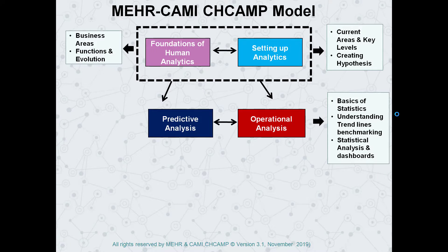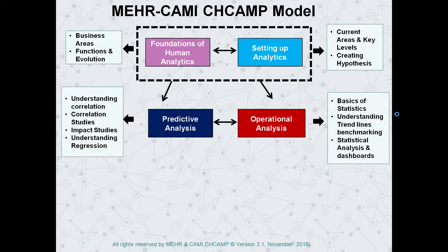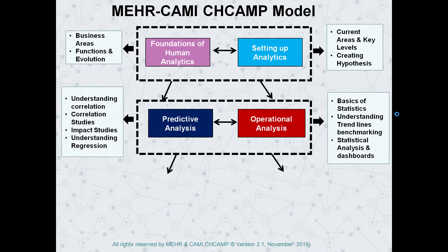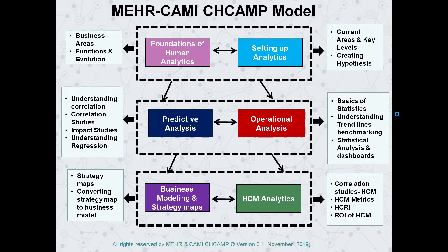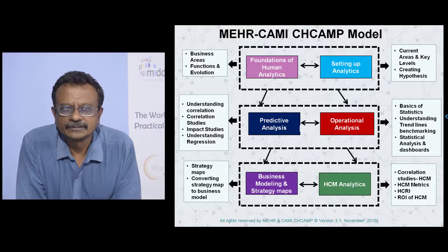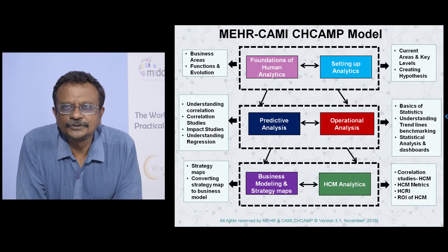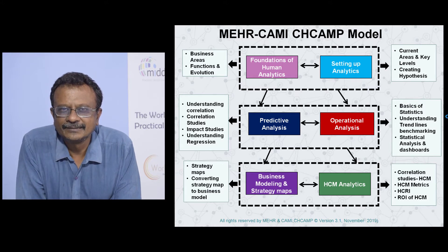In the fourth week, we are going to look at predictive analytics — correlation, regression, and understanding the impact of correlation. And finally, we will get down to human capital analytics through business modeling, strategy maps, and the core area of HCM analytics: how do you analyze an organization. So this is going to be our six weeks. Welcome to this journey, and I'm sure you're going to have a great time. Thank you.